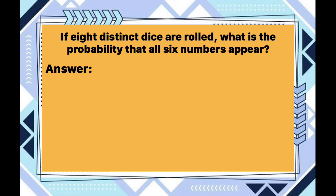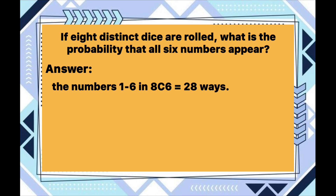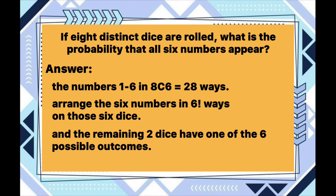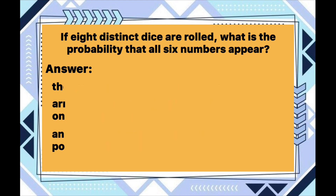We can choose which six of the eight dice will show the numbers one through six in 8C6 equals 28 ways. Then we can arrange the six numbers in 6 factorial ways on those six dice, and the remaining two dice can have any of the six possible outcomes. Therefore, the number of outcomes where all six numbers appear is 28 times 6 factorial times 6 squared.